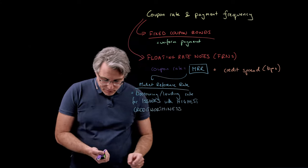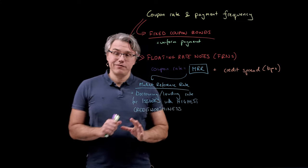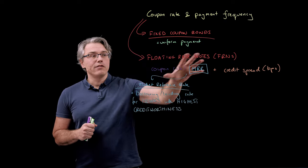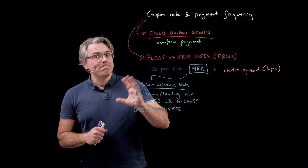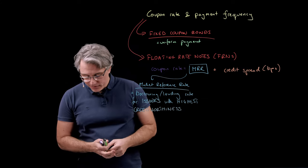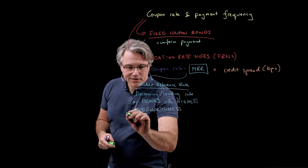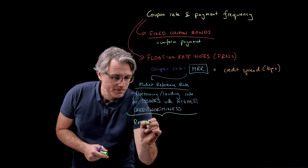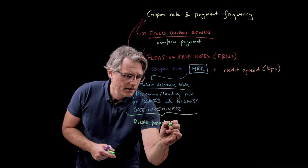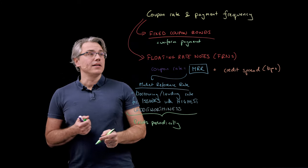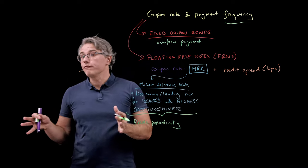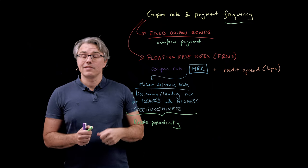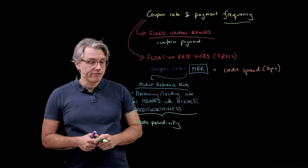The important thing to appreciate is that the market reference rate has nothing to do with the issuer themselves. For example, if a company is issuing a floating rate note, the MRR is going to be independent of that company and will reset periodically. Typically, if the coupon is paid quarterly, then the market reference rate would also reset every quarter, every three months.